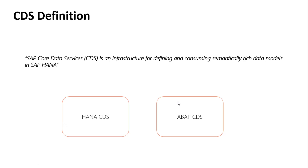ABAP CDS, on the other hand, is not HANA-specific. You can write ABAP CDS even if you don't have a HANA database at the backend — if you have ABAP component 7.5 SP05, you can use ABAP CDS with other databases like Oracle or DB2 as well. ABAP CDS has an ABAP layer; we will be writing it in Eclipse using OpenSQL, which you will understand if you have a basic understanding of SQL.